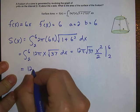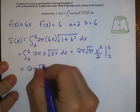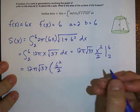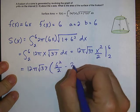So we plug those in 12 pi square root of 37 and then let's plug in 6. We get 6 squared over 2 minus 2 squared over 2.